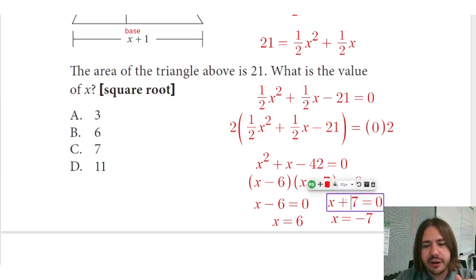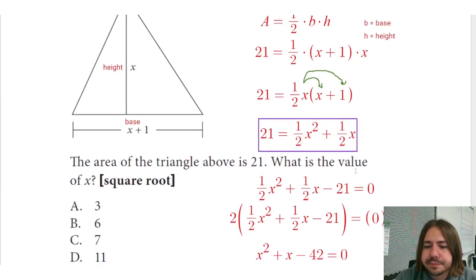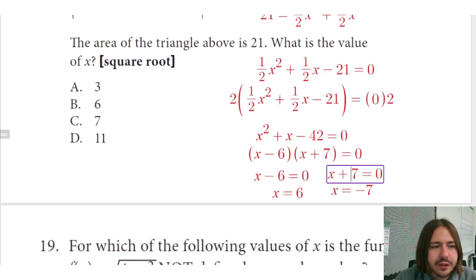So for here, the negative 7 is going to be invalid because you can't have a height that's negative 7 units, right? It doesn't really make sense to have a triangle where the height is negative. So the only choice we really have here is x equals 6, and we see that that's answer choice B.